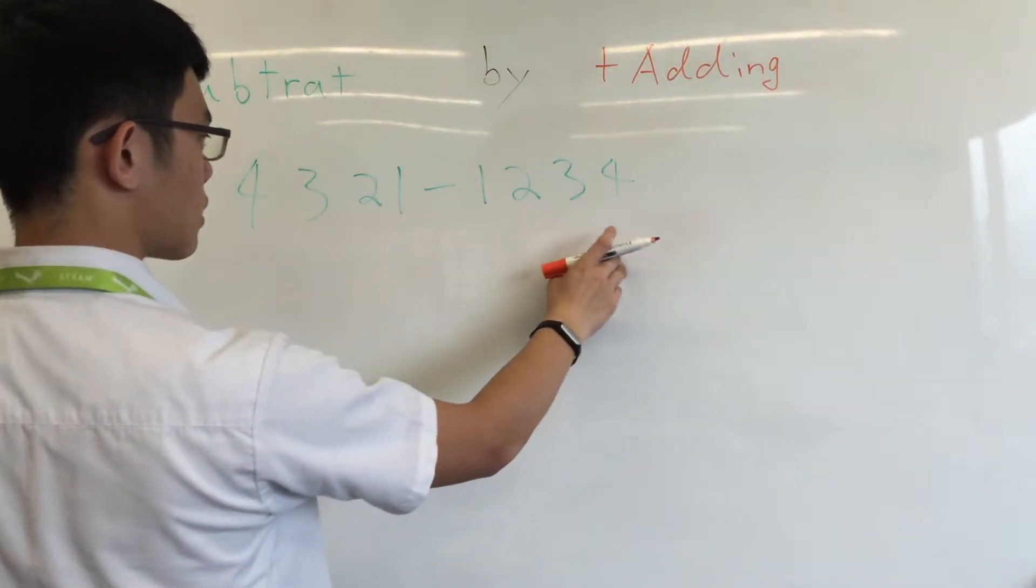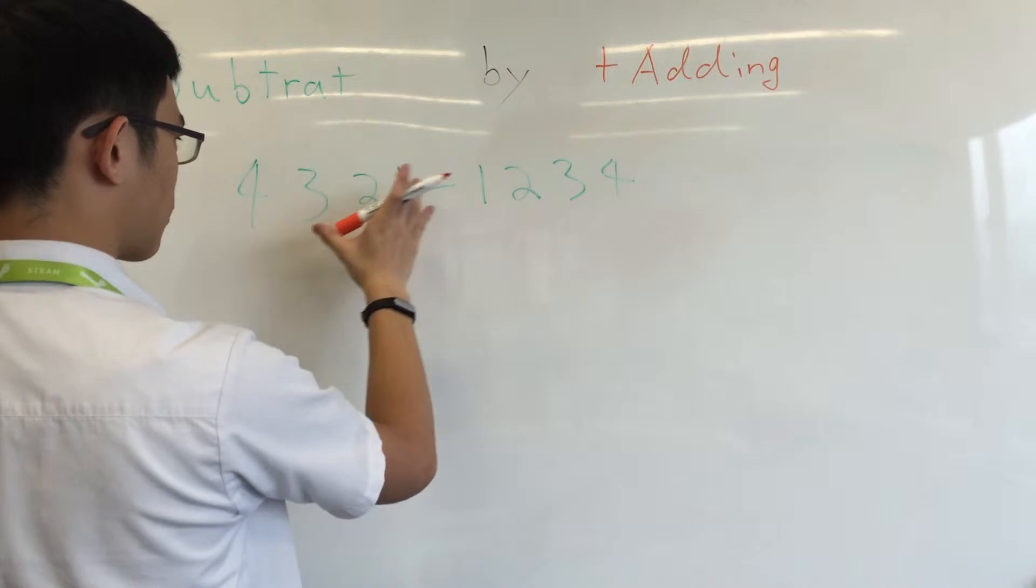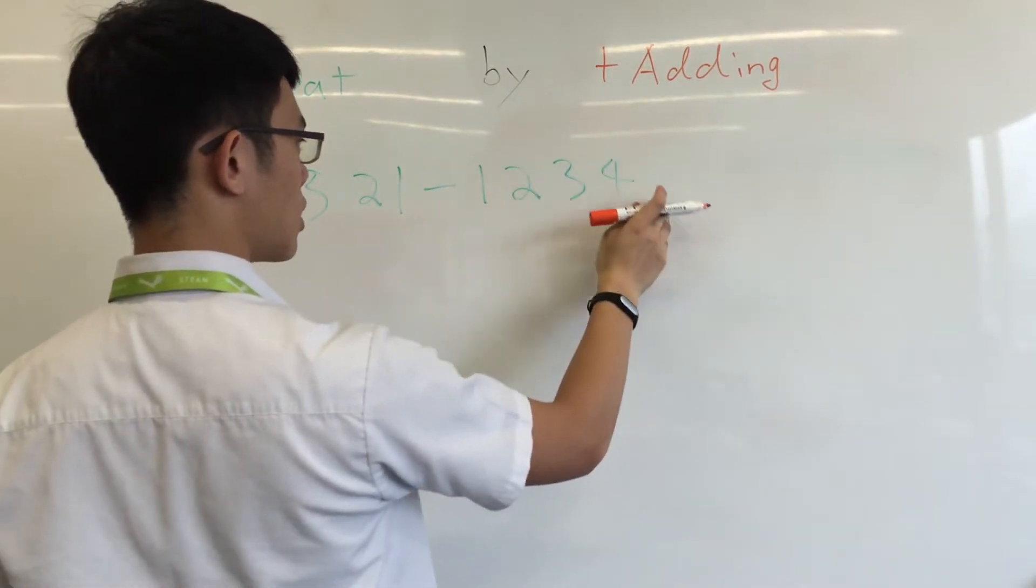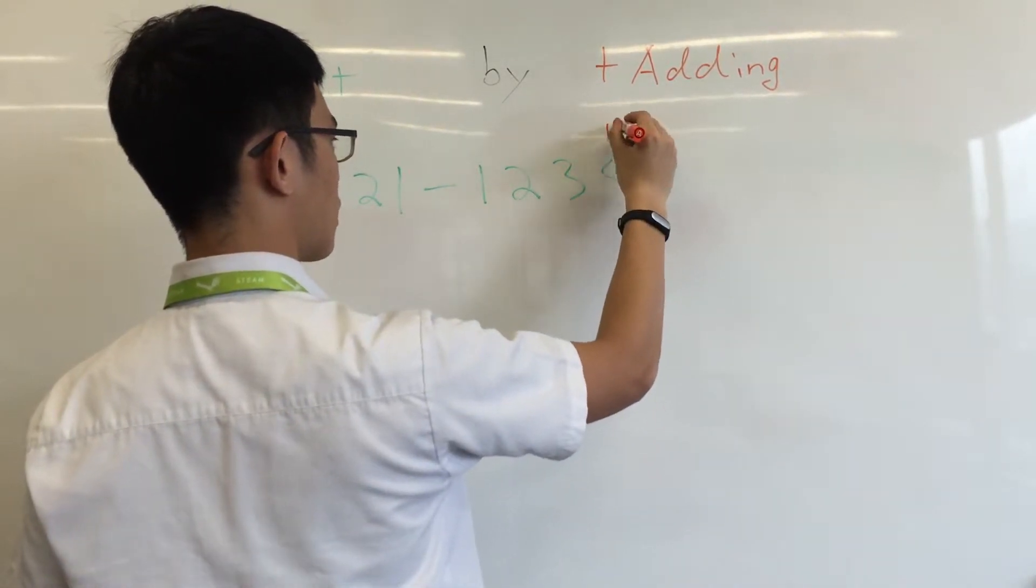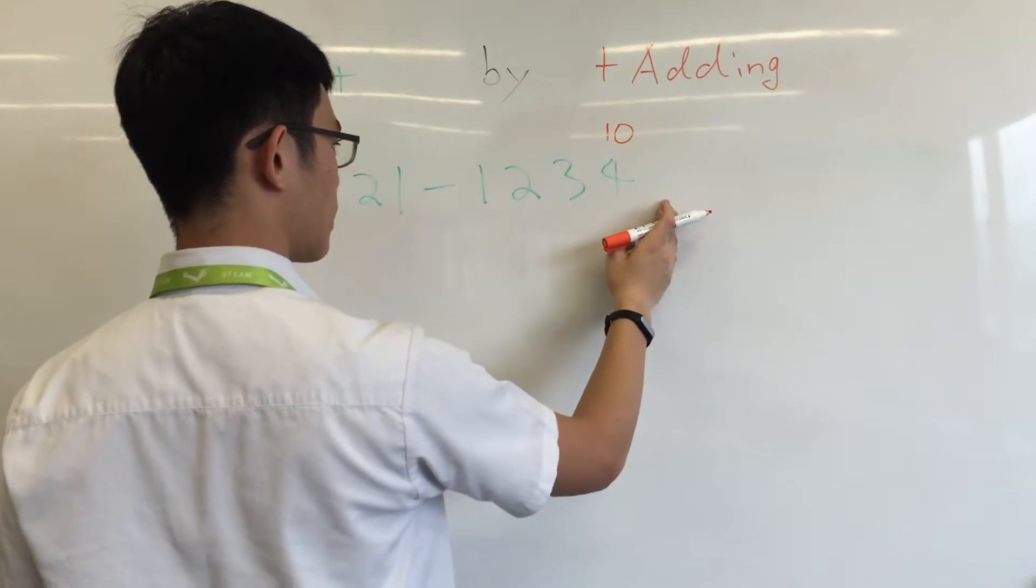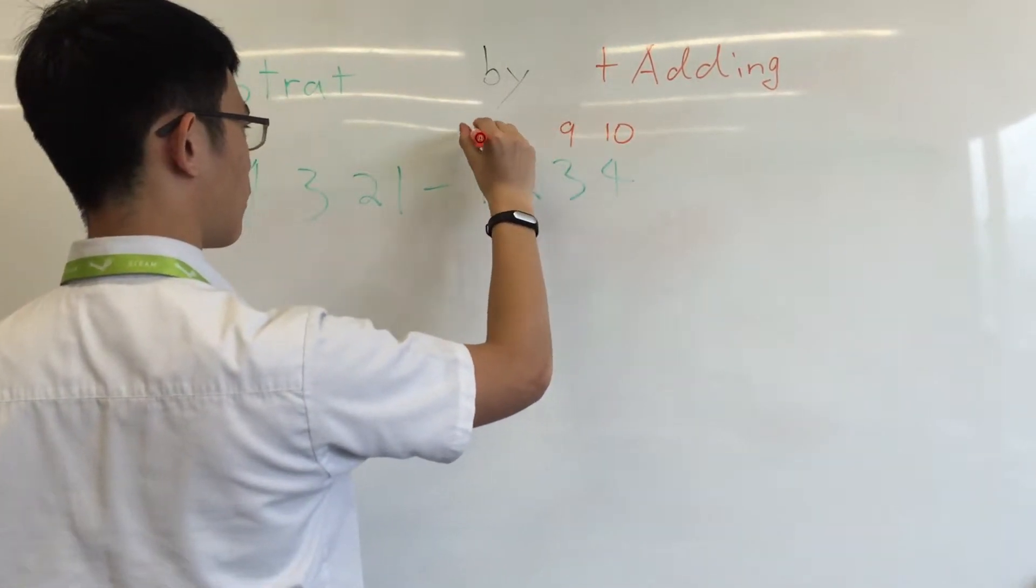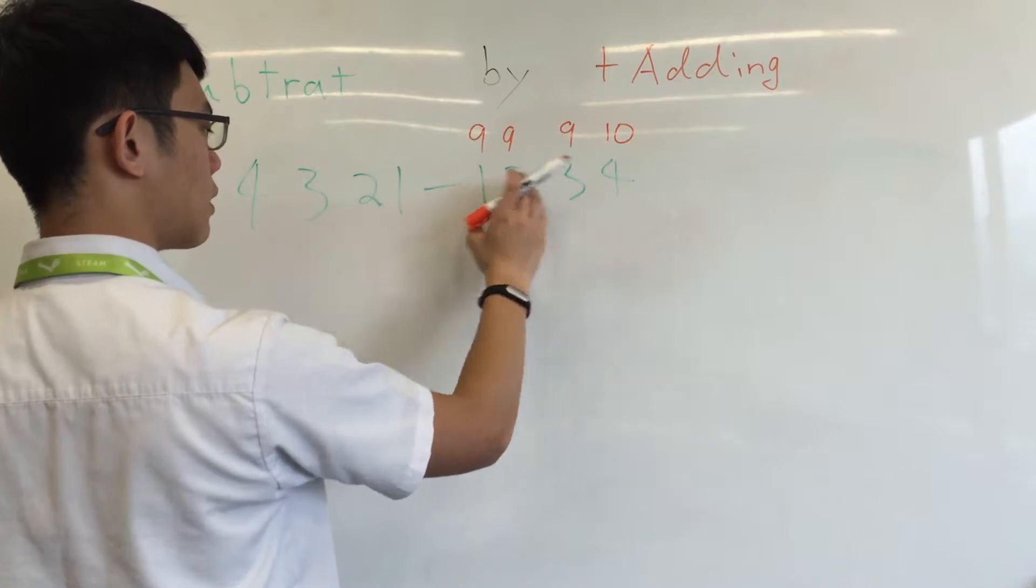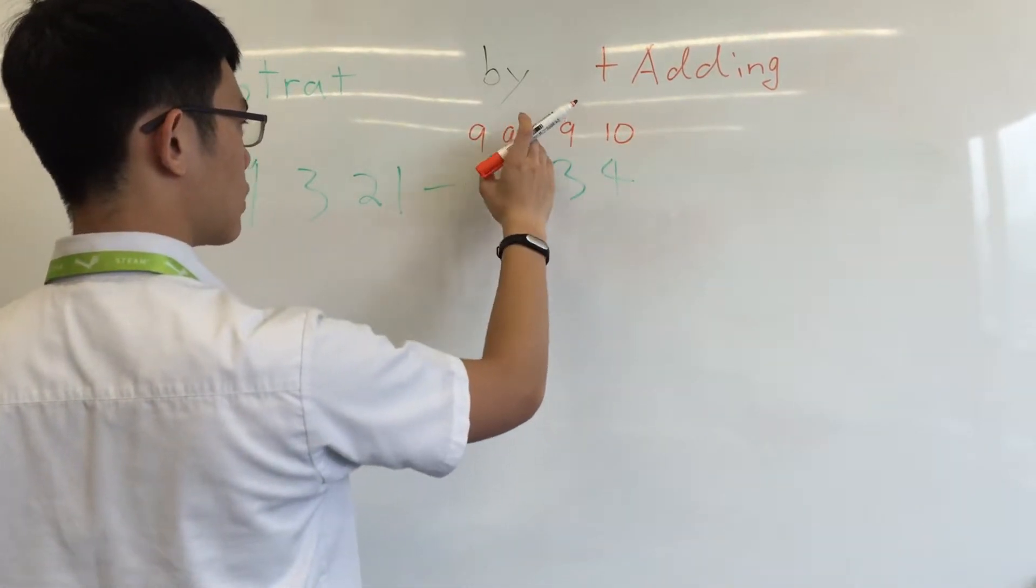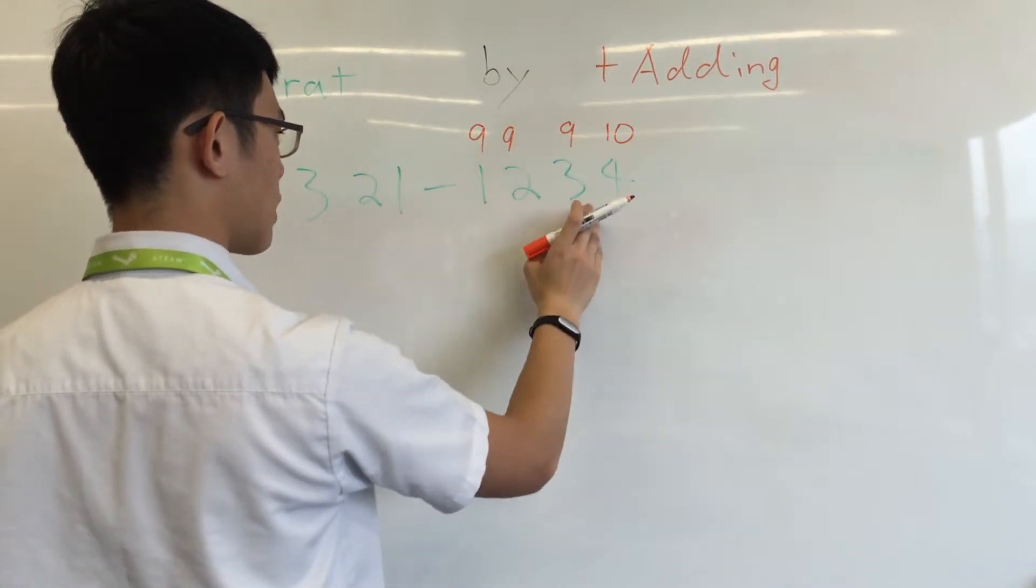So what you do here is you take the number that you're minusing from the original number and you do, for the last digit, you do 10 minus 4. And everything else, you do 9. So any digit in front of the last one, you do 9 minus 2, 9 minus 1, 9 minus 3.